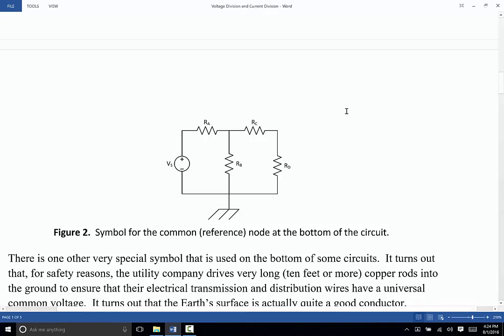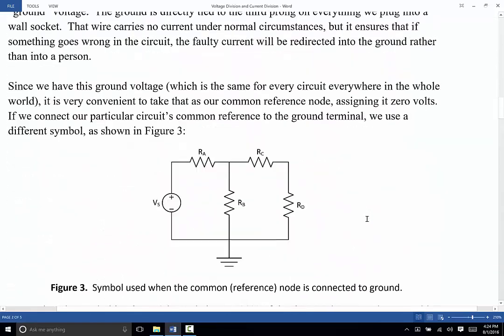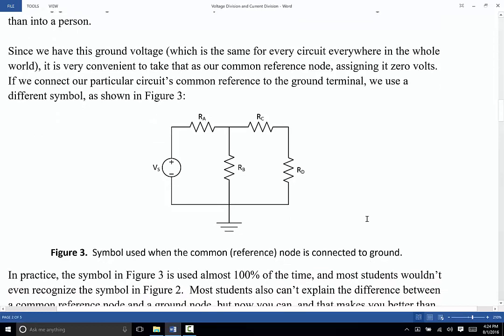So we have the possibility, as shown in Figure 2, of having a reference node or a common node, but if it is literally also connected to the ground, then we give it a very special symbol. And you can see that very special symbol here in Figure 3. So the reference node becomes the ground node if it is literally connected to the voltage that is at the earth's surface.